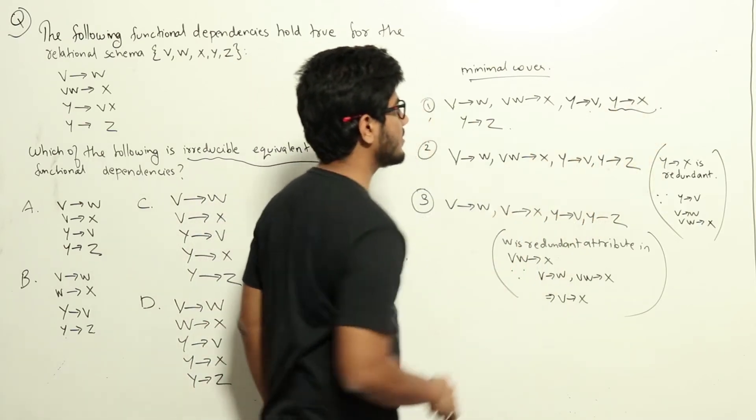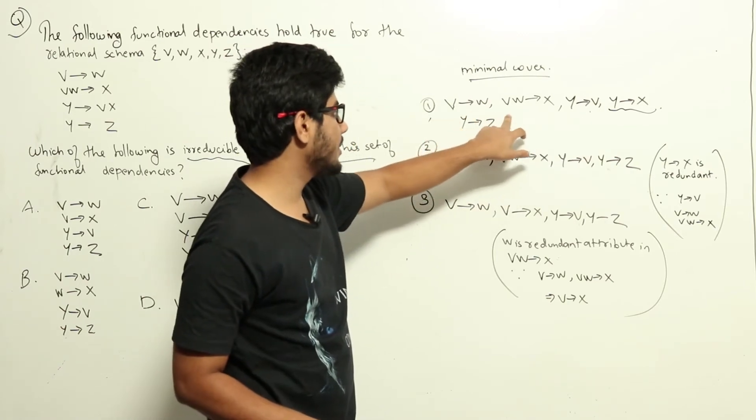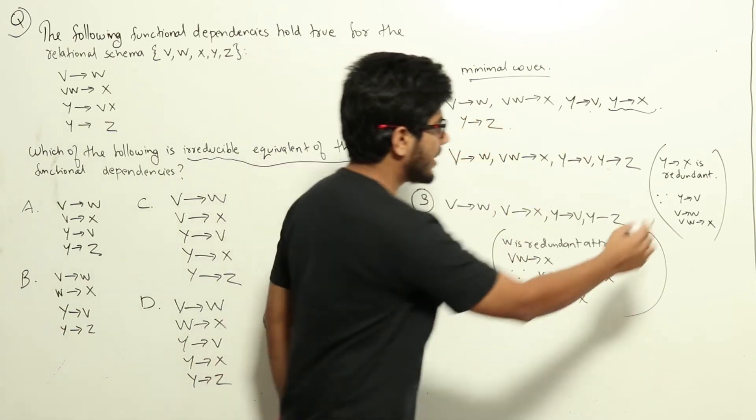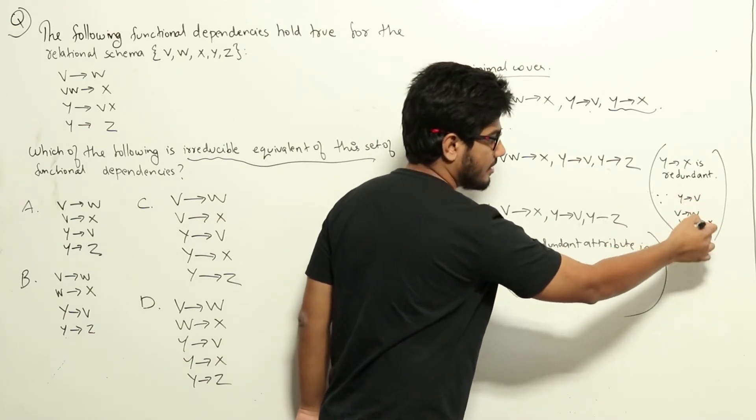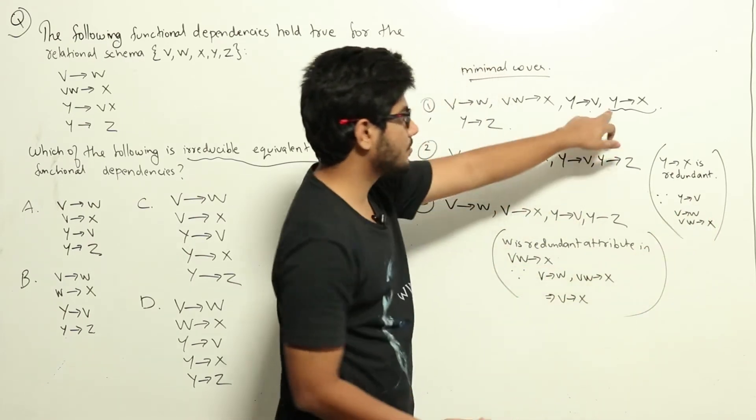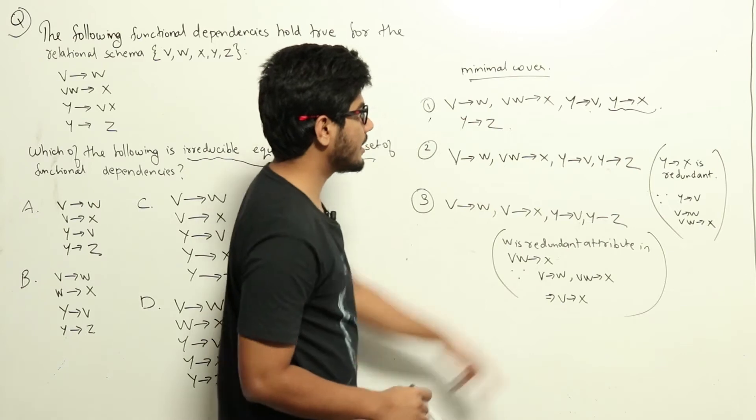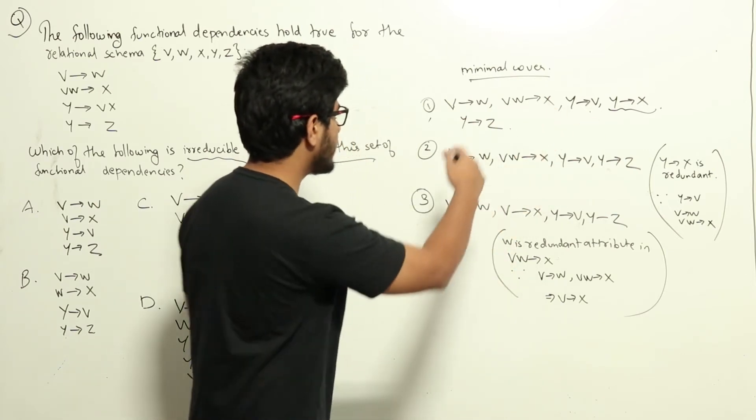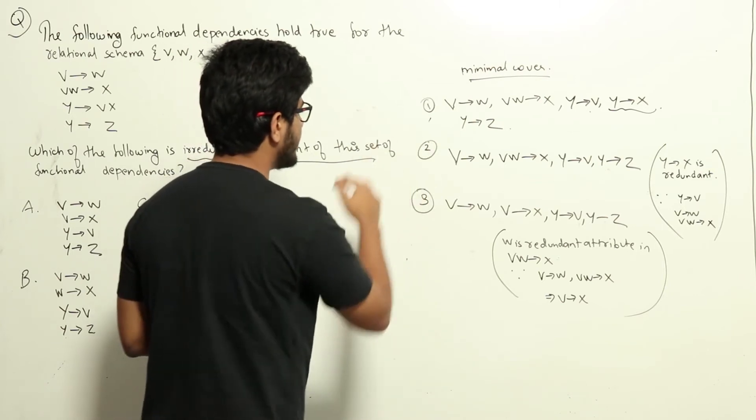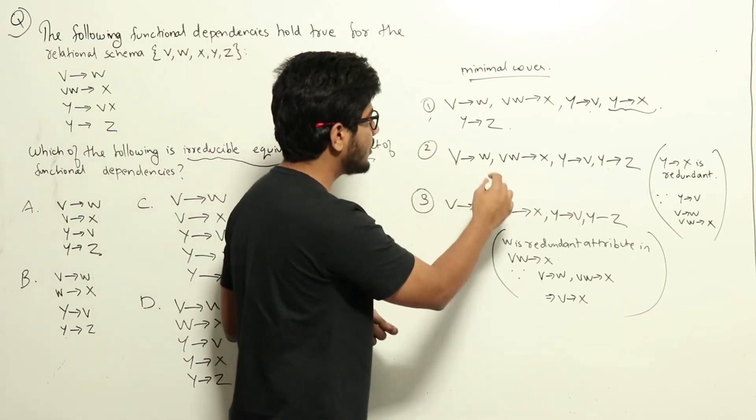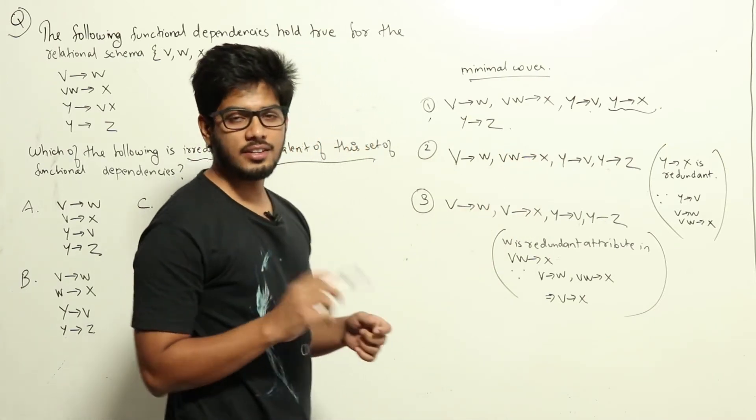Looking at Y gives X: Y gives V, V gives W, and VW gives X, meaning Y can give X indirectly through V without this functional dependency written separately. So Y gives X is already covered and is redundant, which we can remove. There are no more redundant functional dependencies here. After step two, we get: V gives W, VW gives X, Y gives V, and Y gives Z.